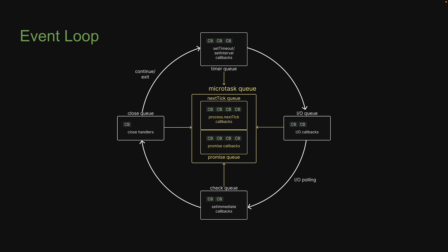I hope you now have a good idea of the order of priority of synchronous code, plus microtask queue callbacks, plus timer queue callbacks. One point I would like to mention is that the timer queue is technically not a queue — it is a min-heap data structure. But for our understanding, thinking of it as a queue makes the process simpler. In the next video, let's understand about the IO queue. Thank you for watching, please do consider subscribing to the channel and I'll see you in the next video.